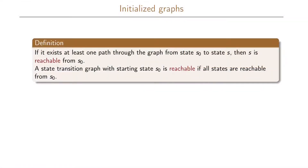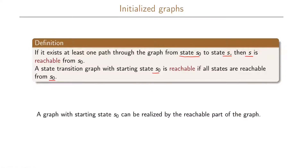For reachable graphs we have the following definition. If there exists at least one path through the graph from state s0 to state s, then s is reachable from s0. A state transition graph with a starting state s0 is then called reachable if all the states are reachable from s0. A graph with starting state s0 can be realized by the reachable part of the graph, under the assumption that s0 is our starting state and we will not start in any other state.